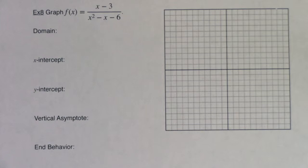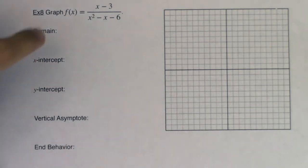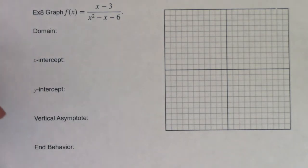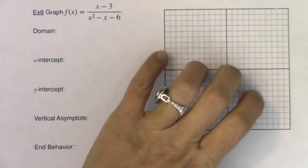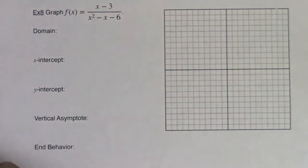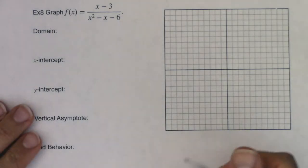Hey Math 31, welcome to example eight. This is the first time we'll be encountering a hole together. You can see that just below end behavior is the word hole. I want to show you how you can identify when you have a hole on your graph, what that does to your actual graph itself, what it does to your range, all of that fun stuff.